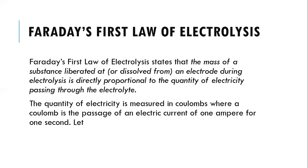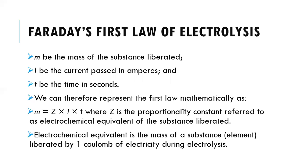Let m be the mass of substance liberated or dissolved, I be the current passed in amperes, and t be the time in seconds. We can therefore represent the First Law mathematically as: m = z × I × t, where z is the proportionality constant referred to as the electrochemical equivalent of the substance liberated or dissolved. The electrochemical equivalent is the mass of a substance or element liberated or dissolved by one coulomb of electricity during the electrolysis process.